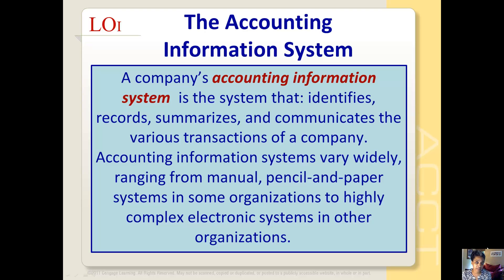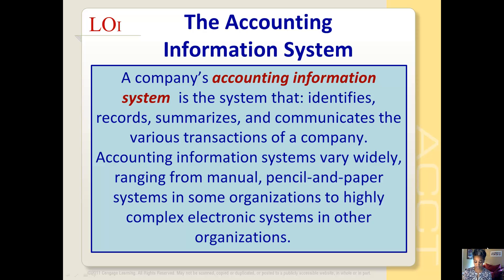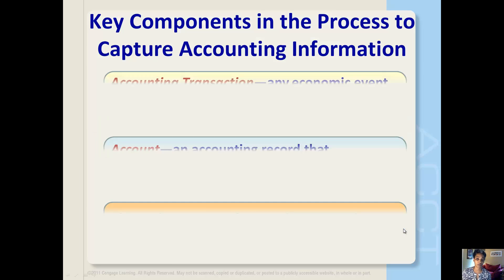Now that we've been through all of the basic financial statements, we're really going to get back to basics and talk about recording accounting transactions. But first, let's talk about the accounting information system. A company's accounting information system is the system that identifies, records, summarizes, and communicates the various transactions of a company. Accounting information systems vary widely — from an old-fashioned manual pencil and paper system to highly complex electronic systems — depending on the size of the firm.